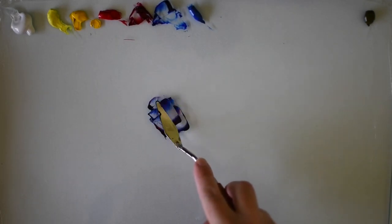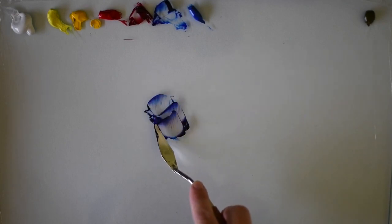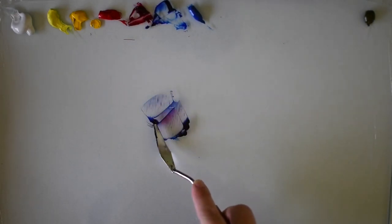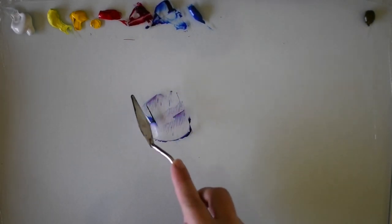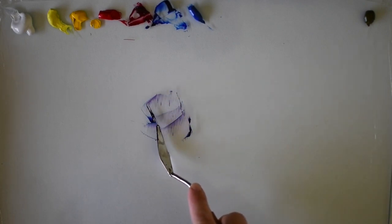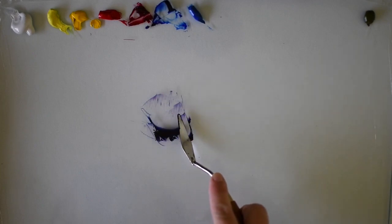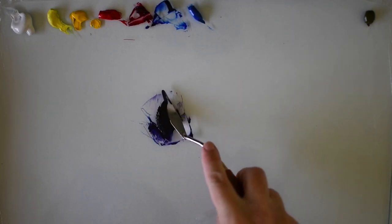Mix that up until you get a nice dark purple color. You don't want it to be too red, so it's almost a very dark bluey purple. Just make it as dark as possible.